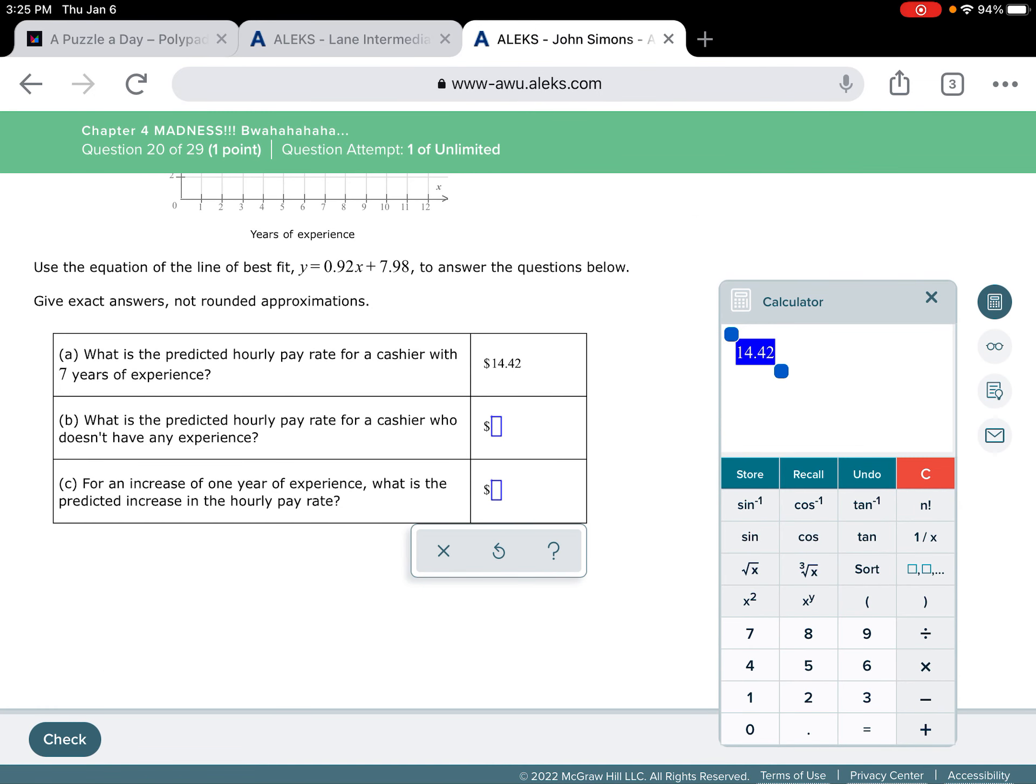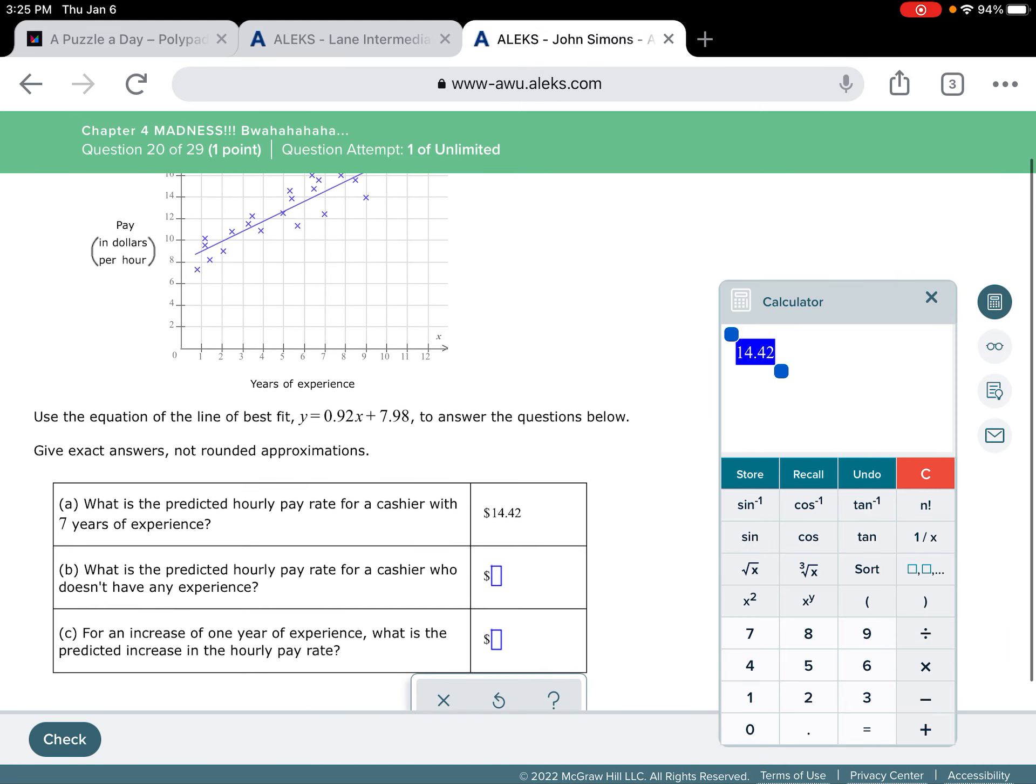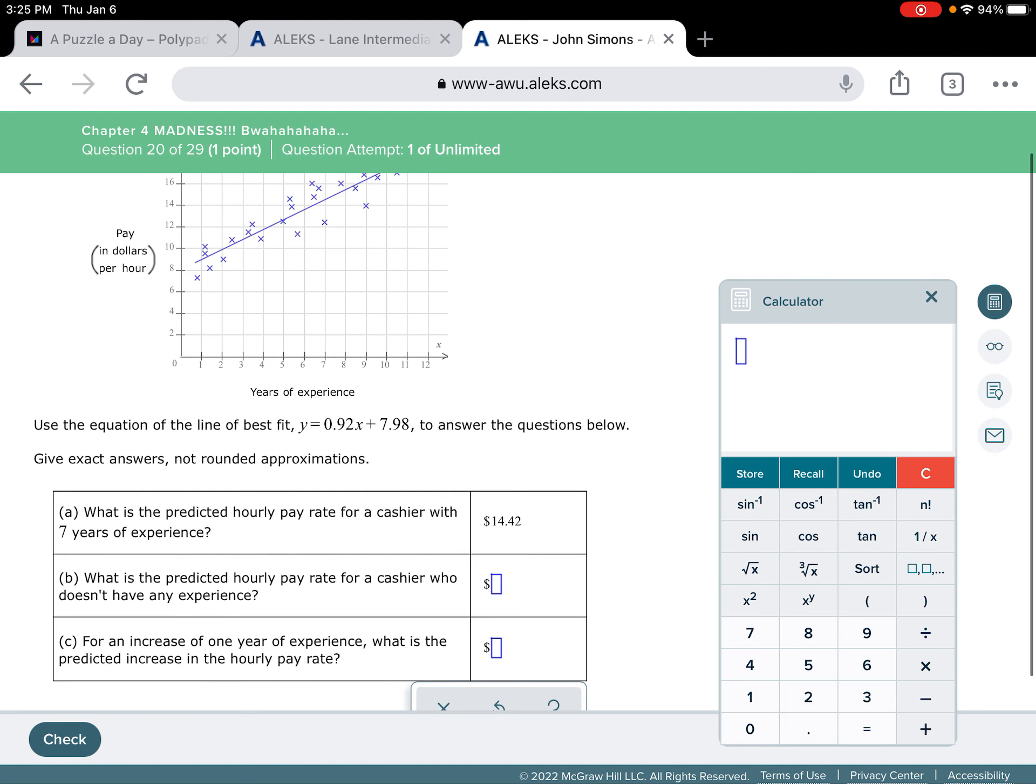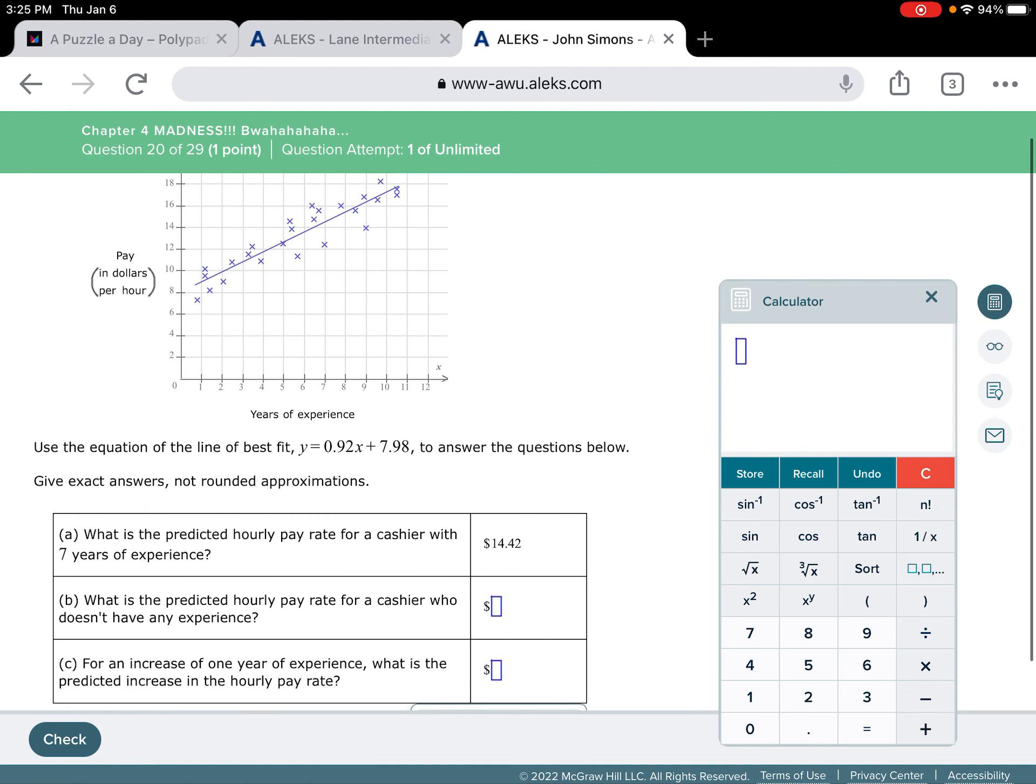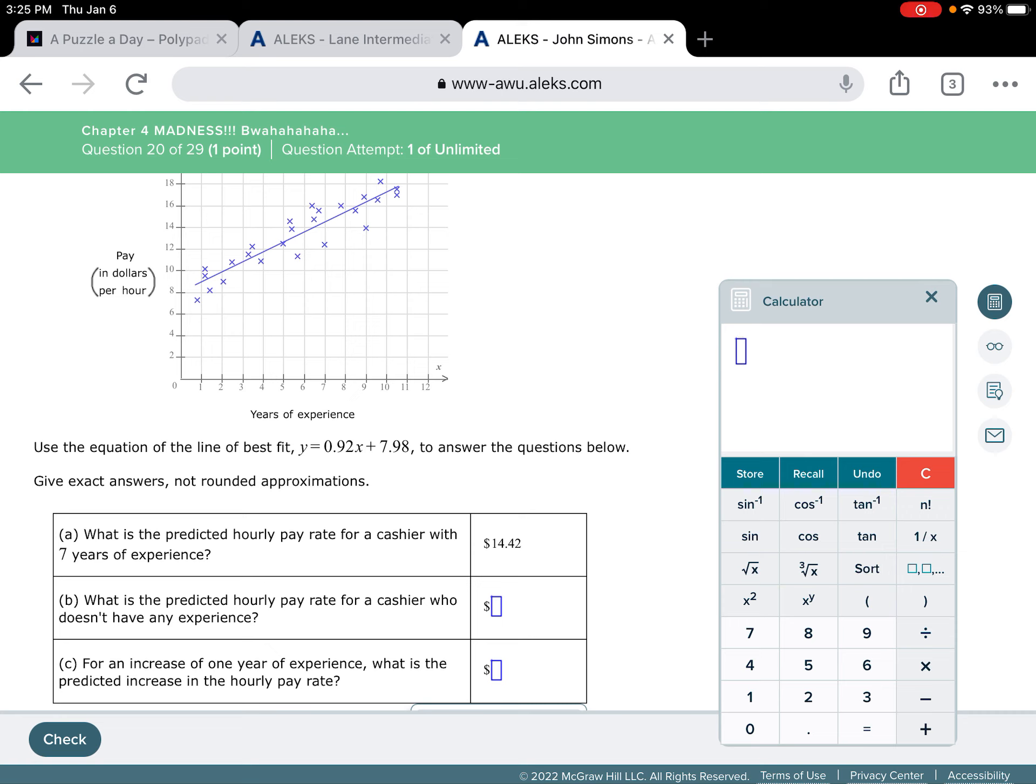Next one, what is the predicted hourly pay rate for a cashier who doesn't have any experience? This is actually a lot easier than it looks, because even though that blue line doesn't extend all the way to the left side, which is the y-axis, we can use the equation. So if you have no experience, that means X is 0. So you would have 0.92, and I'm just going to write this so you'll see how silly this is, right? But I go 0.92, if it would let me do it, times 0 plus 7.98. So hopefully, if you're looking at that, you're like, why did he put that in? 0 times anything is 0.